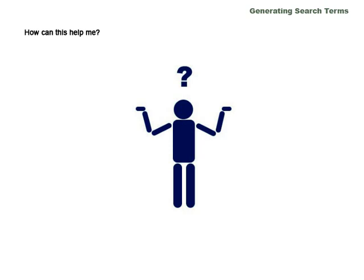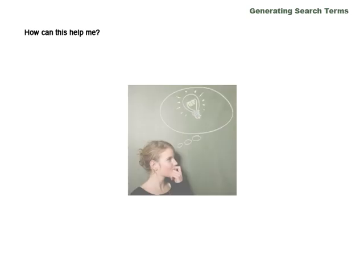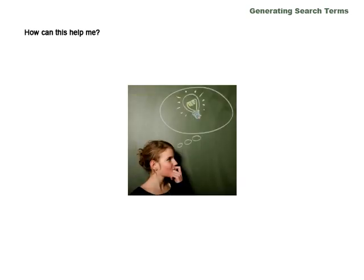Maybe you're wondering why thinking about search terms is important and how it can help you. The main thing it can do is help you save time and be a more efficient searcher. Thinking about search terms can help you explore different perspectives of your topic, find more relevant results, and make your projects more interesting and engaging for both you and your readers.